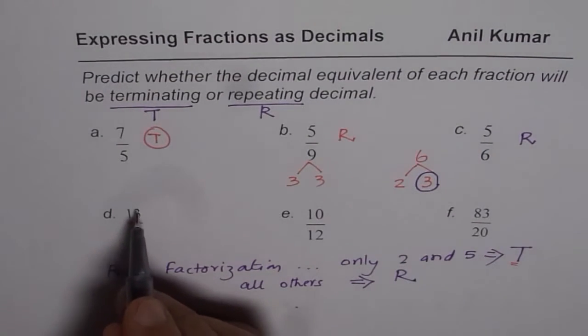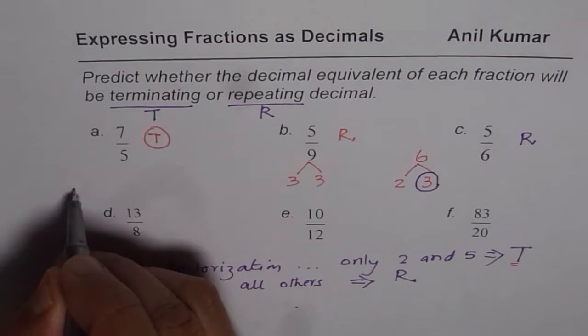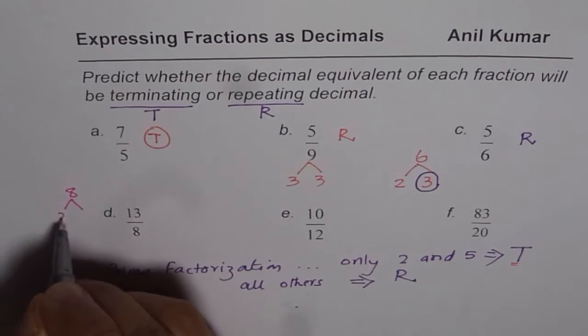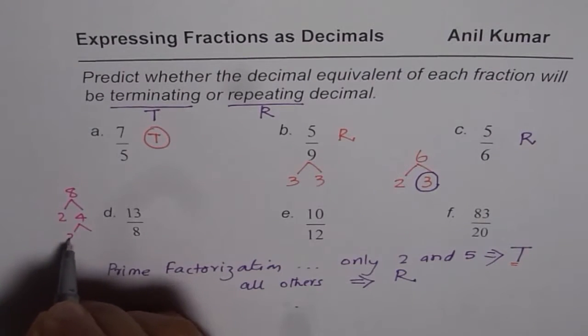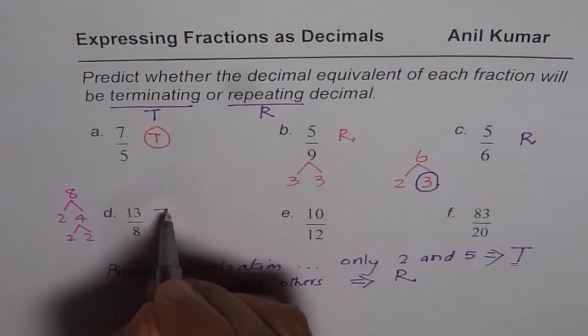Now let's look into 13 divided by 8. Now let's write down factors of 8. 8 is 2 times 4 and 4 is 2 times 2. Since they are all 2s, it should be terminating.